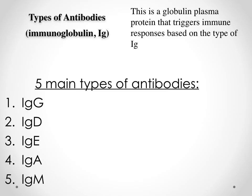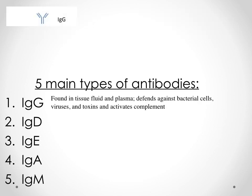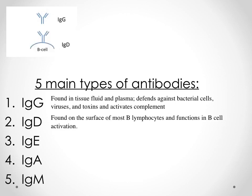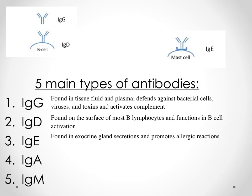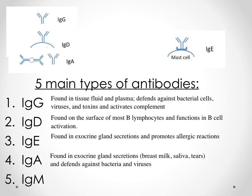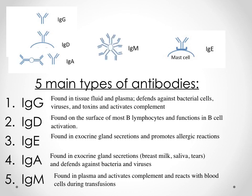In terms of structure, we have five distinct classifications based on structure and function. The first is IgG — a simple monomer of immunoglobulin found in fluids and plasma. It defends against bacterial infection, viral infection, and toxins, and will activate complement proteins. The next form is IgD — a membrane-bound monomer. These membrane-bound monomers are found on memory B cells and function in B cell activation to known pathogens.